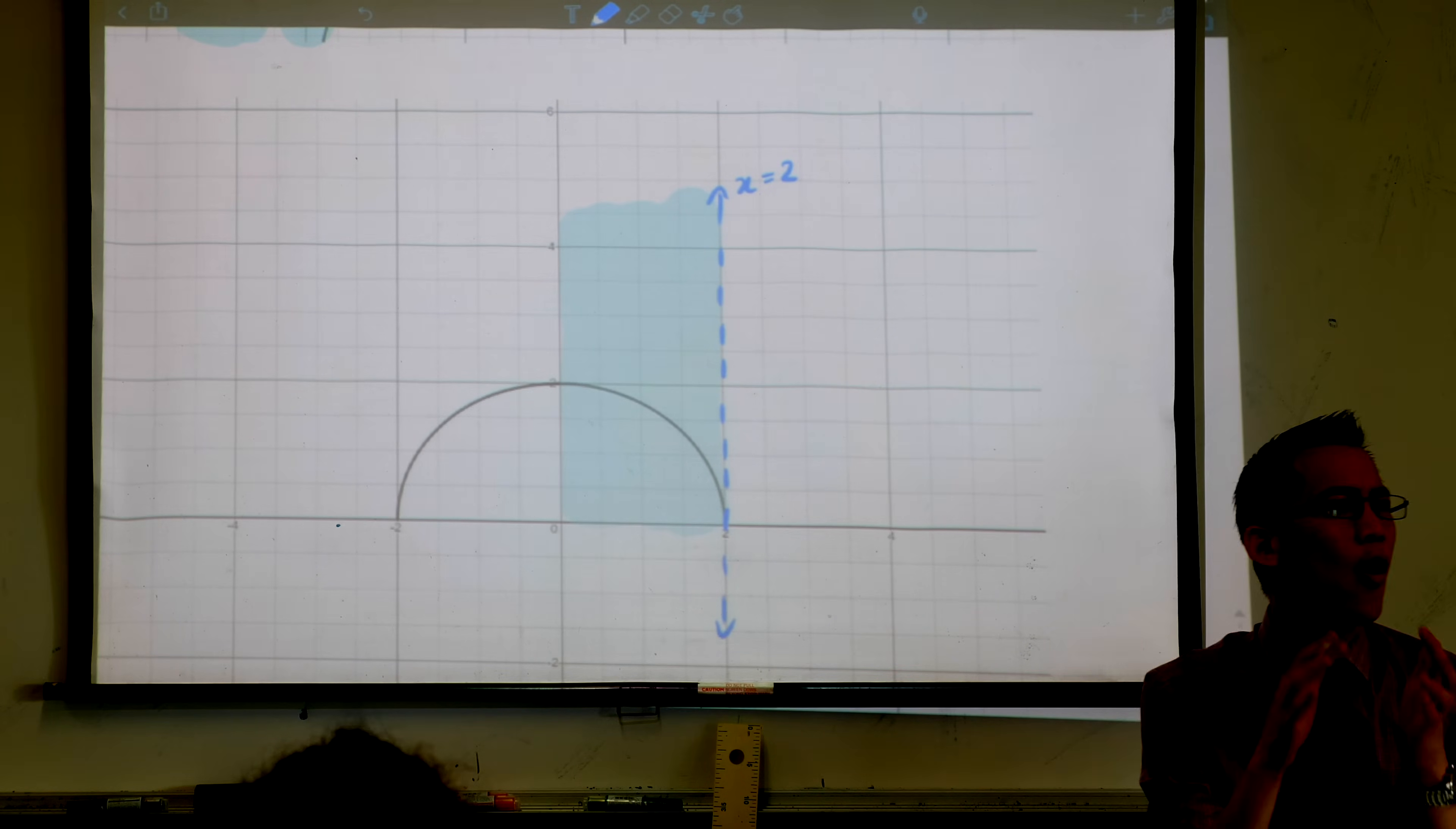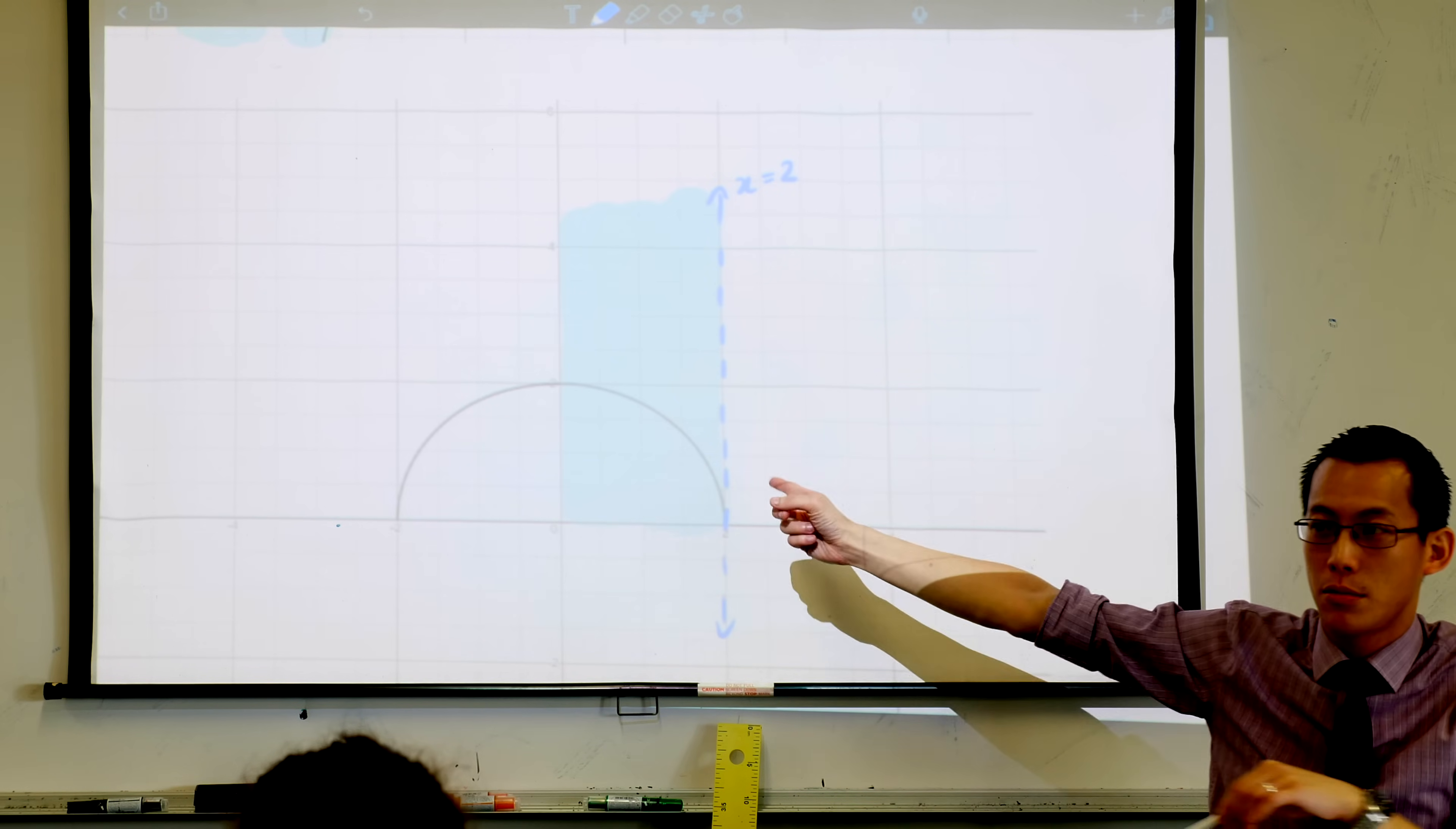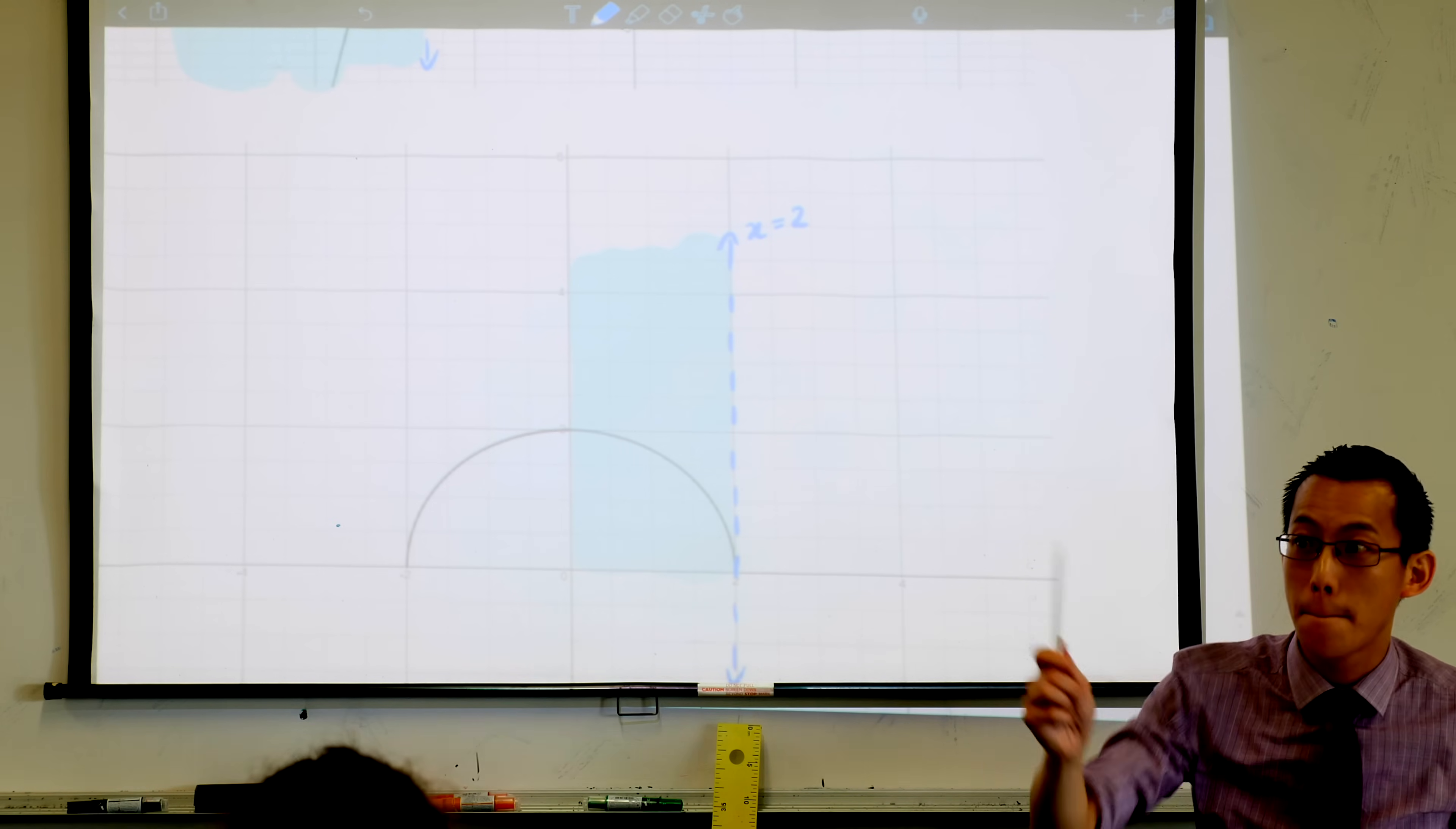Now, in all three of the previous graphs, I got a horizontal asymptote. Did you notice that? All three of them, I got y equals zero, right? Do I get a horizontal asymptote for this guy? Now, the answer is no, but the question is why? Like, I got it so many times before. Why don't I get a horizontal asymptote for this guy? Because it continues.